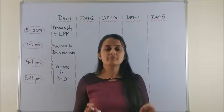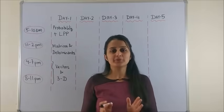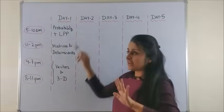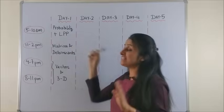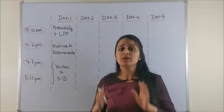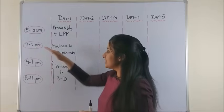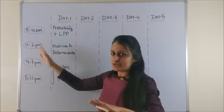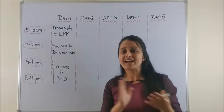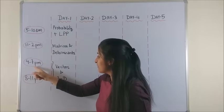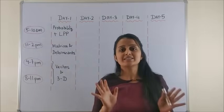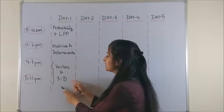Whatever plan you make, have faith that you're actually going to do it and make it as realistic as possible. For Day 1, I've kept 5 hours for probability and linear programming — they're very high-scoring and not very difficult to understand. Then for the afternoon, 11 to 2 p.m., I've kept something light: matrices and determinants. Moving on, I've kept 3 hours and then another 3 hours — a total of 6 hours to revise vectors and 3D geometry.